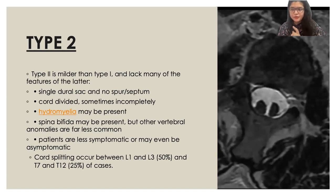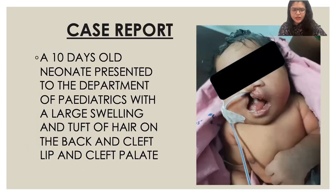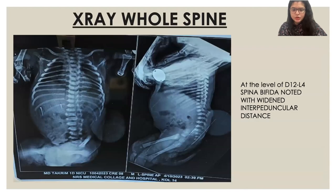Cord splitting occurs between L1 and L3 in 50 percent of cases, and between T1 and T12 in 25 percent of cases. The case presented is a 10-day-old neonate who presented to the Pediatrics department with a large swelling and tuft of hair on the back, and cleft lip and palate, as seen in the picture. X-ray showed spina bifida from D12 to L4 with widened interpedicular distance.